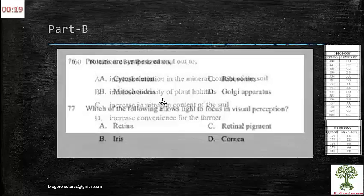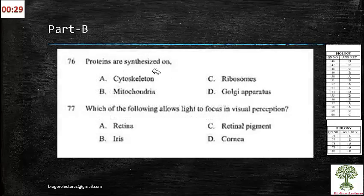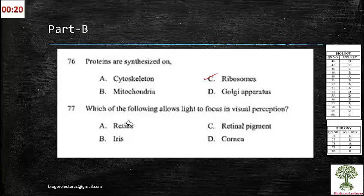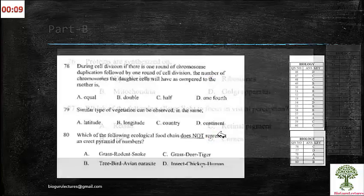Let us look at part B here. In part B, proteins are synthesized on. So ribosomes are the unique regions where the protein synthesis will take place. Next 77th one, which of the following allows light focus in visual perception. It's cornea only.